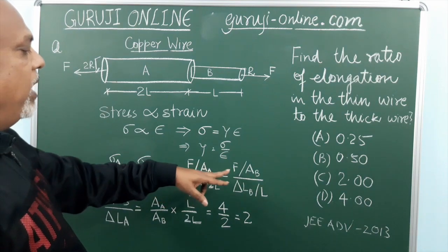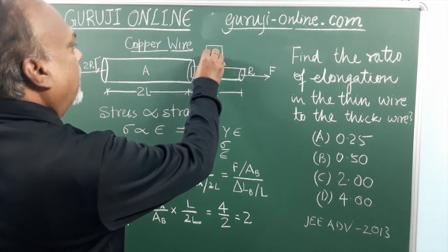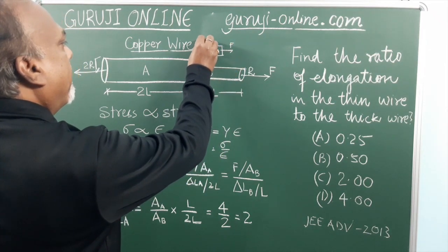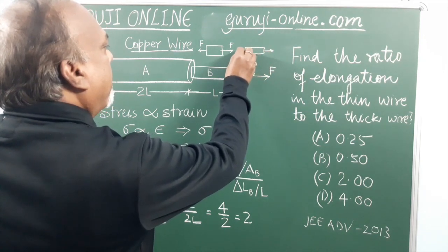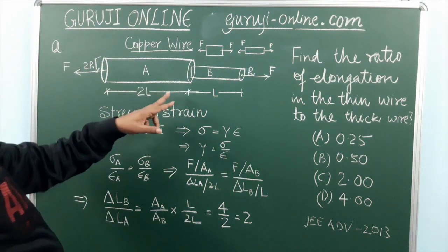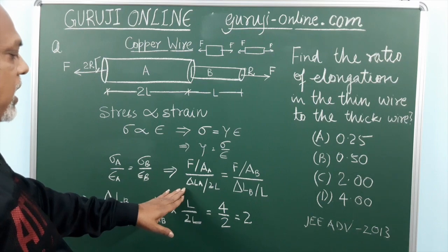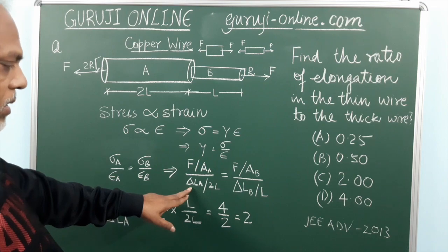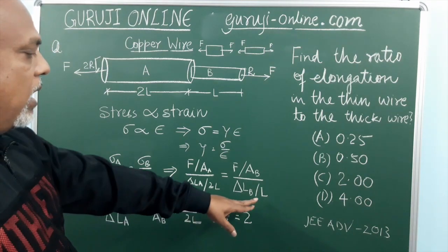And here the F will remain the same because if we draw the free body diagram then it will be like this only. So here the force acting between those two portions will be the same. And upon strain, strain is nothing but elongation upon the length. This is the elongation upon 2L and this is in this portion elongation upon L. This is the length.